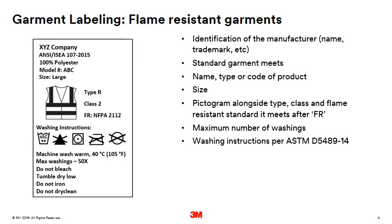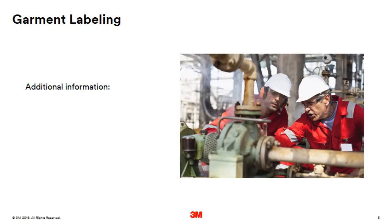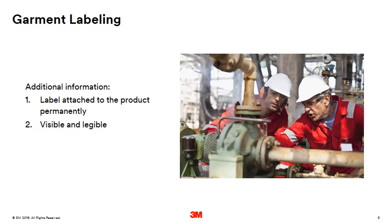As mentioned earlier with non-flame resistant garments, all of these items can be on the same label or on more than one label. Keep in mind that all labeling should be permanently attached to the garment and must be visible and legible. Lastly, manufacturers are required to make sure the label is durable during wash and after the number of wash cycles stated in the label, it must still be legible.